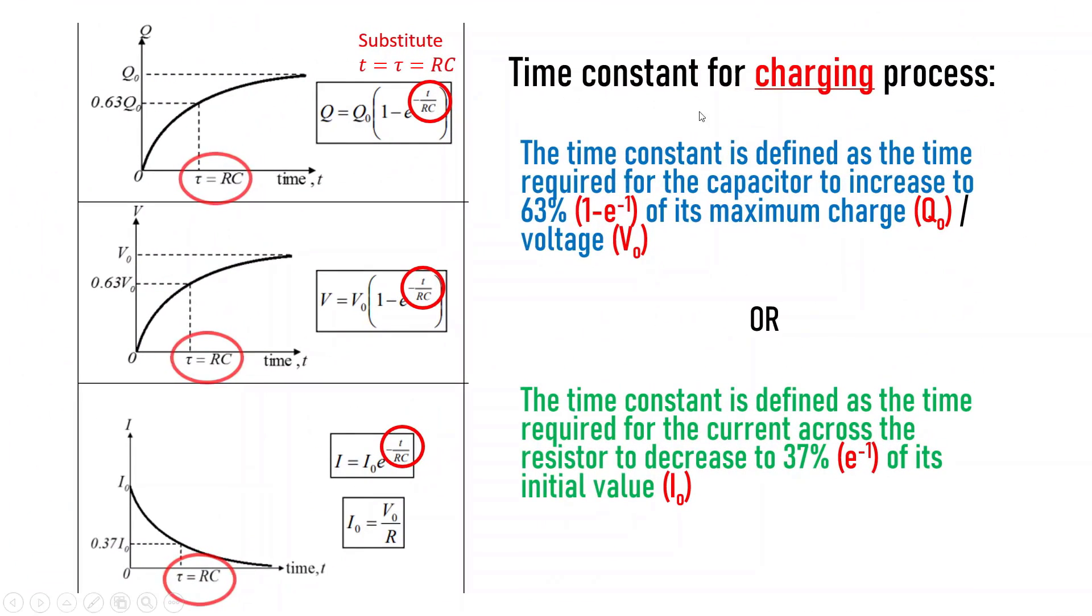Let's see. Time constant for charging process. The time constant for charging process is defined as the time required for the capacitor to increase to 63% of its maximum charge or voltage. Or,